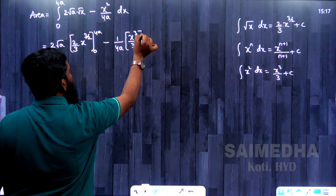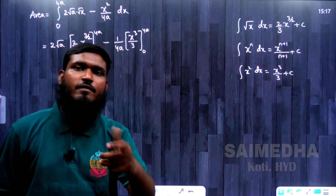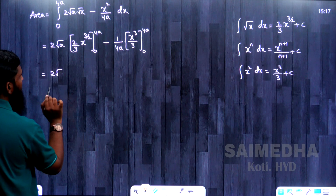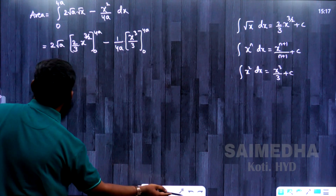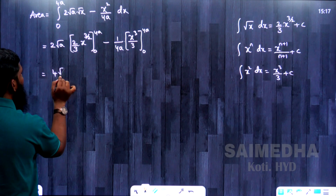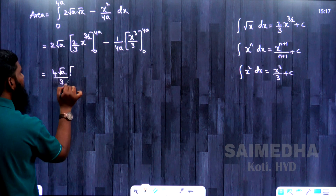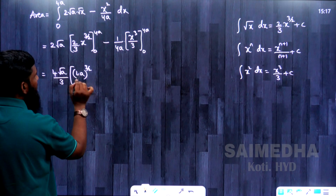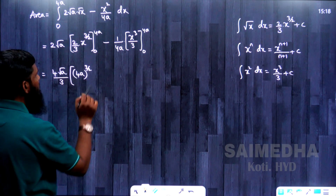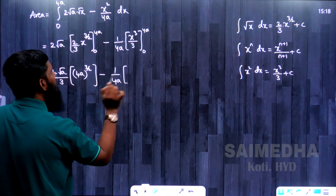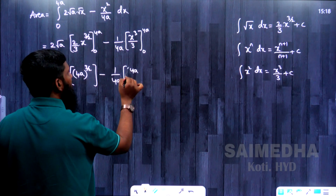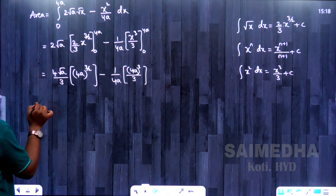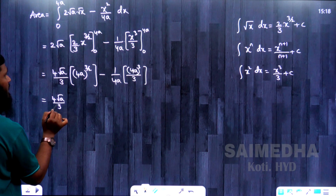Applying upper limit minus lower limit: the first term becomes 2√a · (2/3) · (4a)^(3/2), with the lower limit giving 0. The second term becomes (1/4a) · (4a)³/3, again with the lower limit giving 0. Combining constants: the first term gives (4√a/3) · (4a)^(3/2).